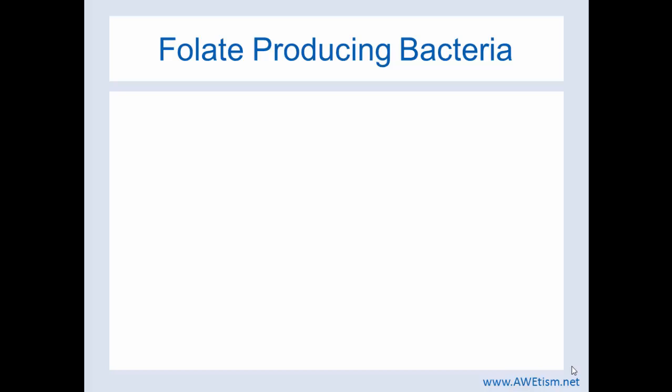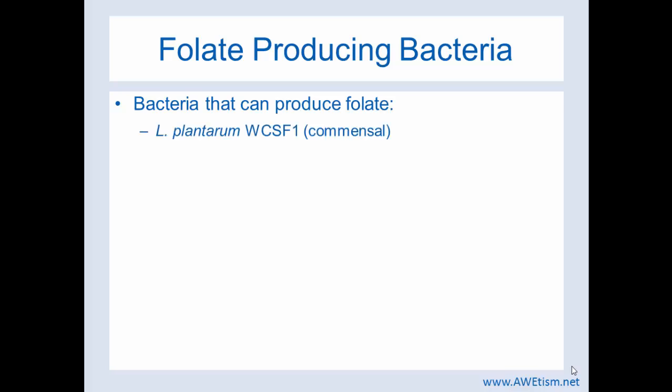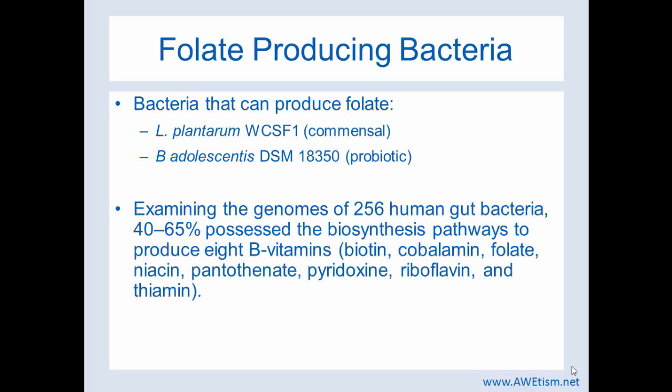There are also folate-producing bacteria. This is another way the body can get folate — from the bacteria in our gut. Bacteria that can produce folate include L. plantarum WCSF1, which is commensal, as well as B. adolescentis DSM18350, which is a probiotic strain. Research looking at the genomes of 256 human gut bacteria found that 40 to 65% of those gut bacteria possess the ability to produce B vitamins, with folate being one of them.